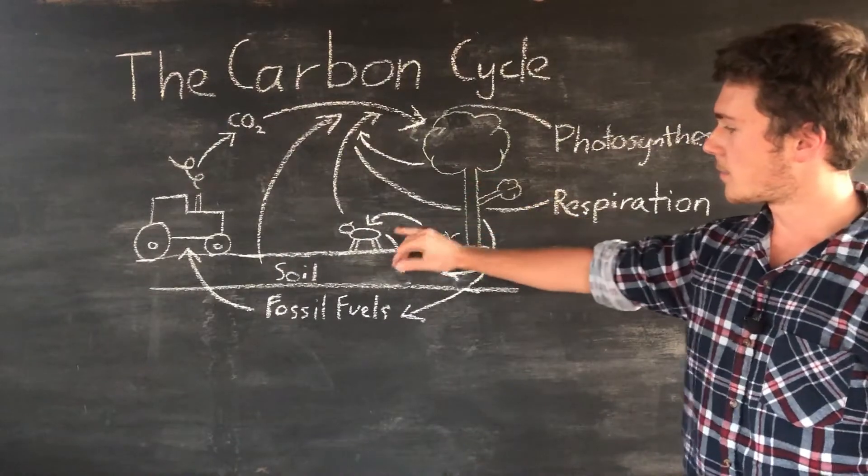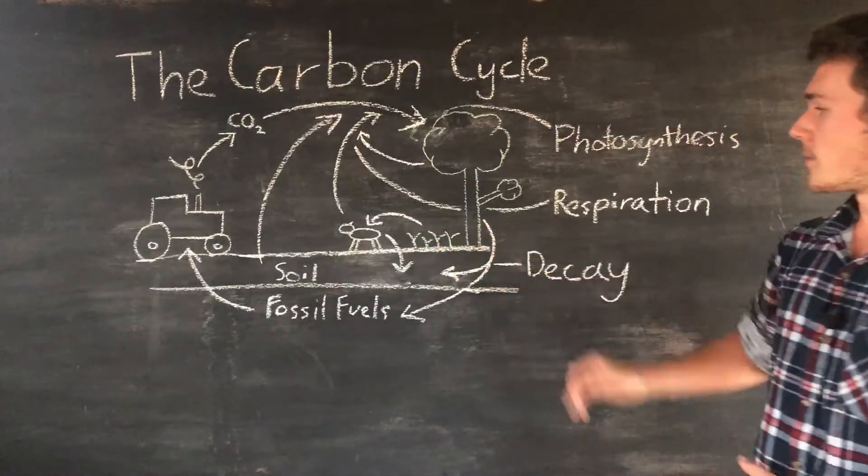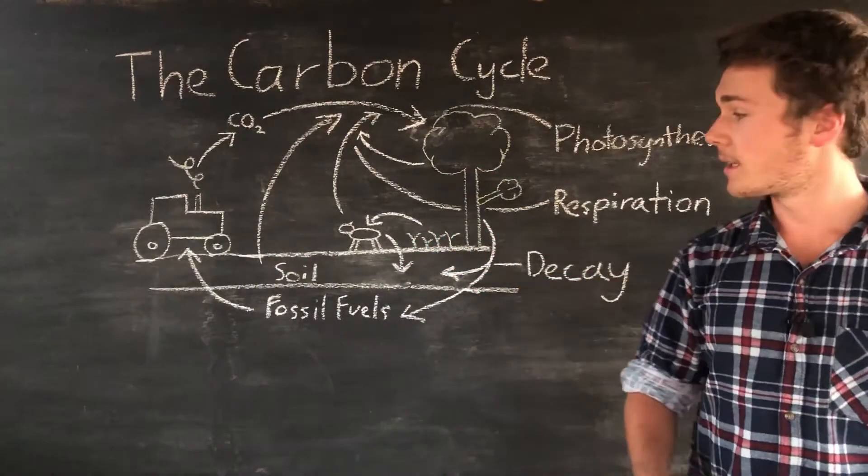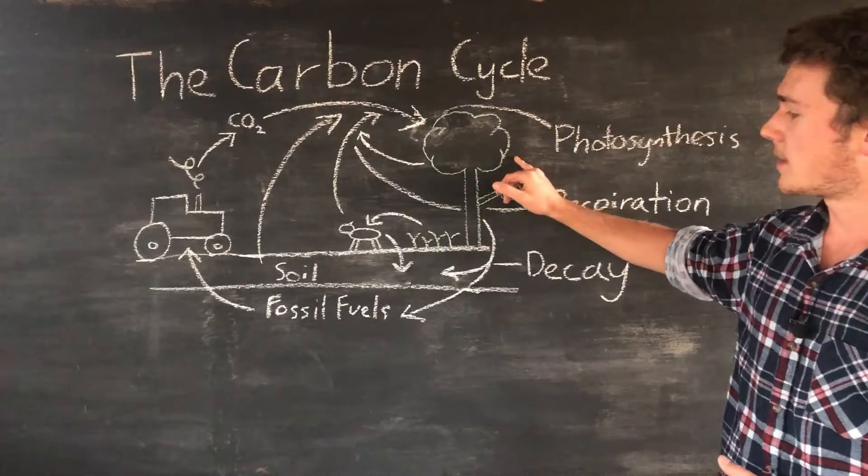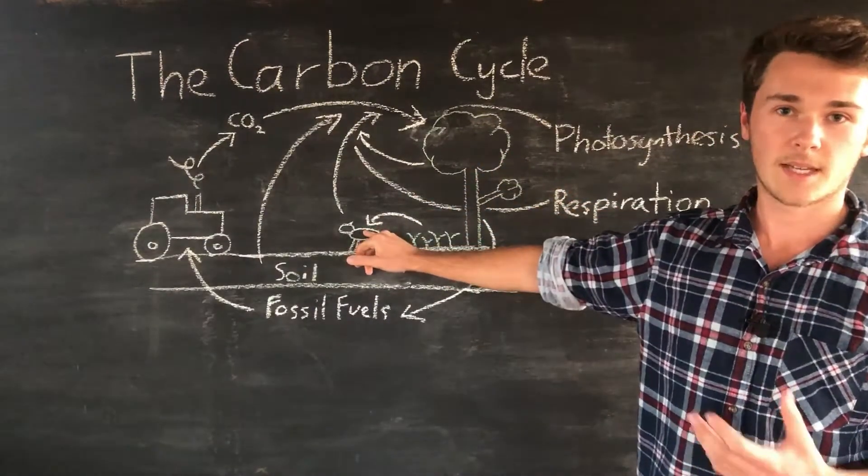Otherwise, animals can eat the plants. Our ruminating animals can eat our plants and then the carbon goes from the glucose in here into our animal.